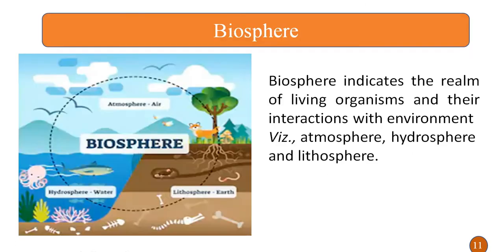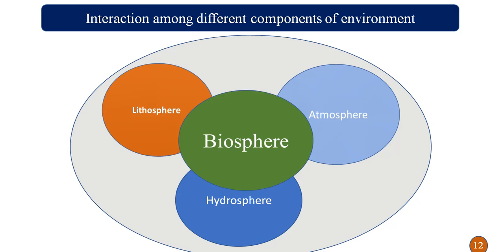The biosphere indicates the realm of living organisms and their interaction with the other components of the environment — that is, the atmosphere, hydrosphere and lithosphere. As we can see in the diagram, the biosphere is the zone where living organisms interact with the other components of the environment. The biosphere interacts with the lithosphere, atmosphere and hydrosphere. These different components of the environment interact with each other.